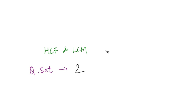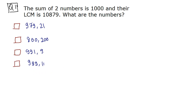Hey guys, this is question set number 2. Let's get started with our first question. The sum of two numbers is 1000 and their LCM is 10879. What are these numbers?